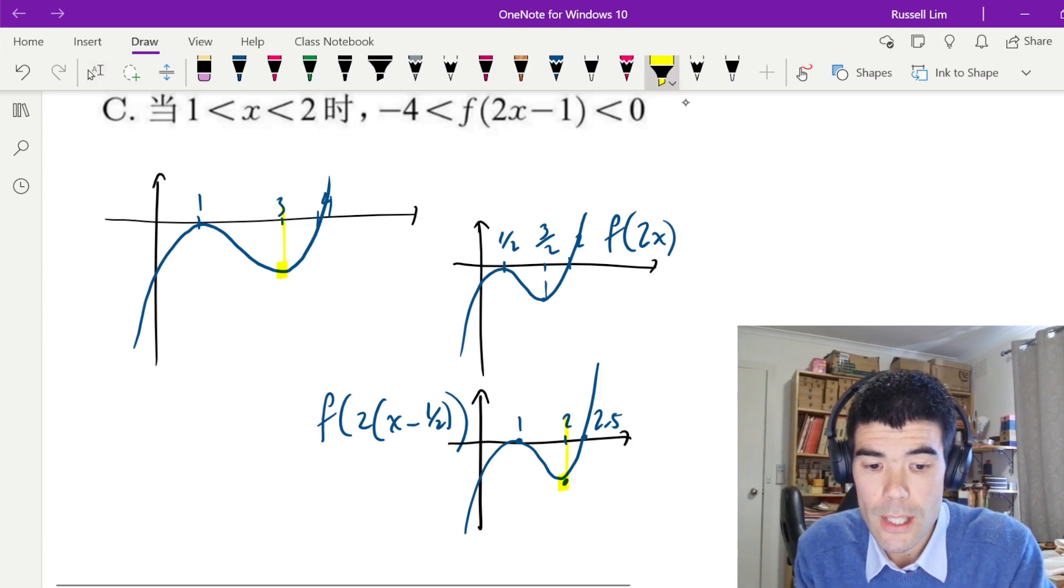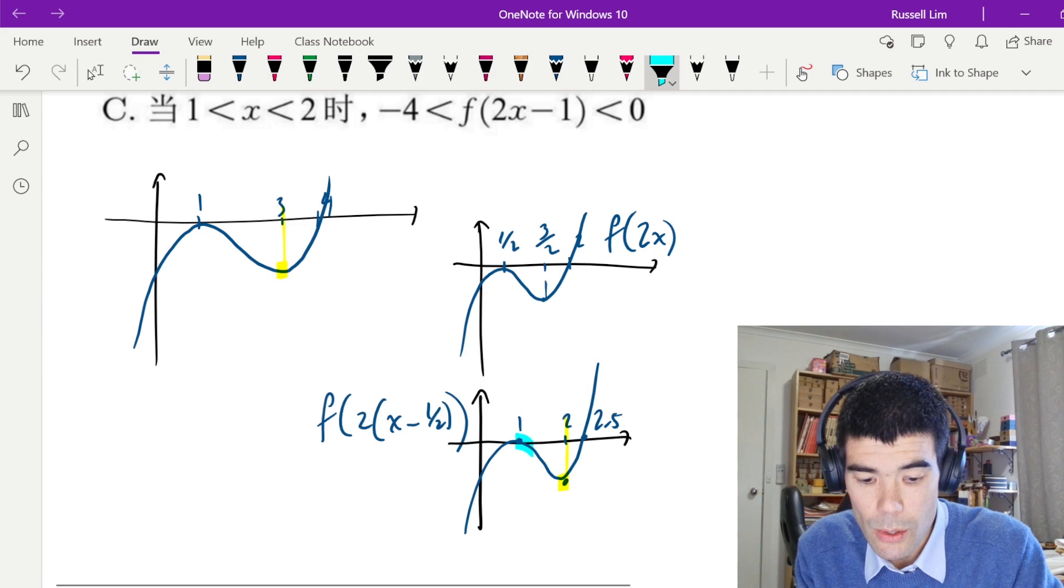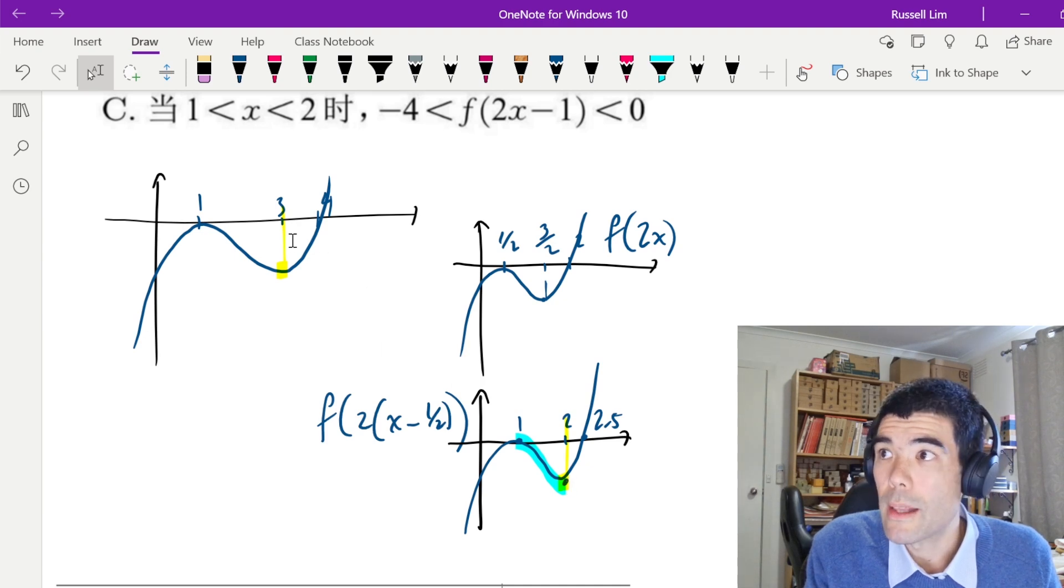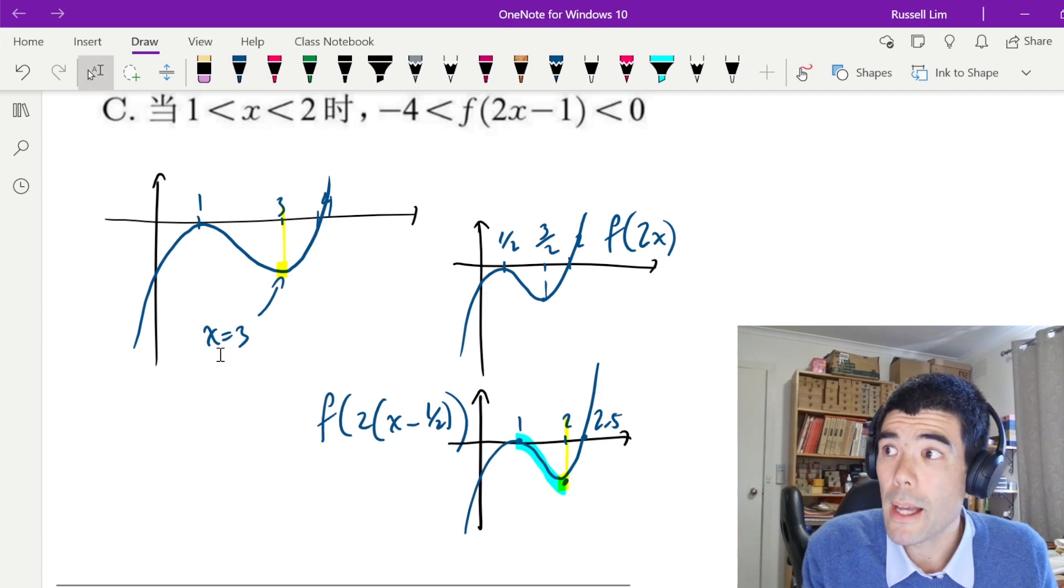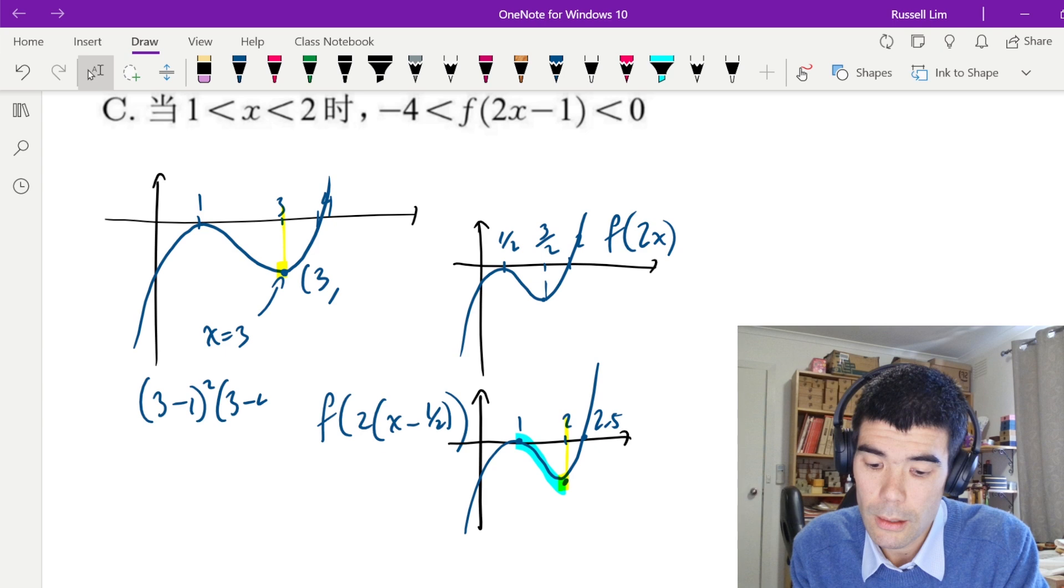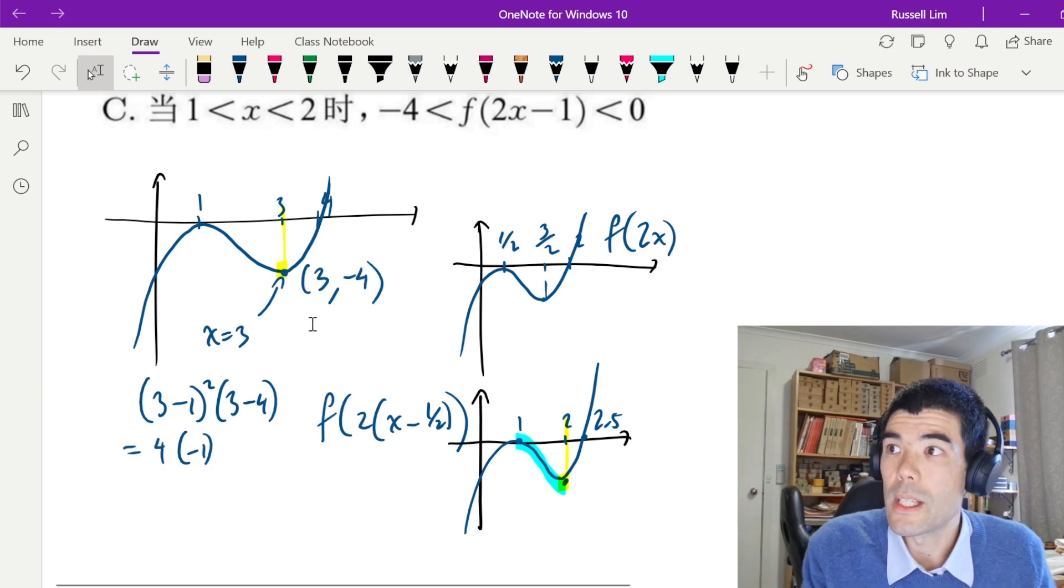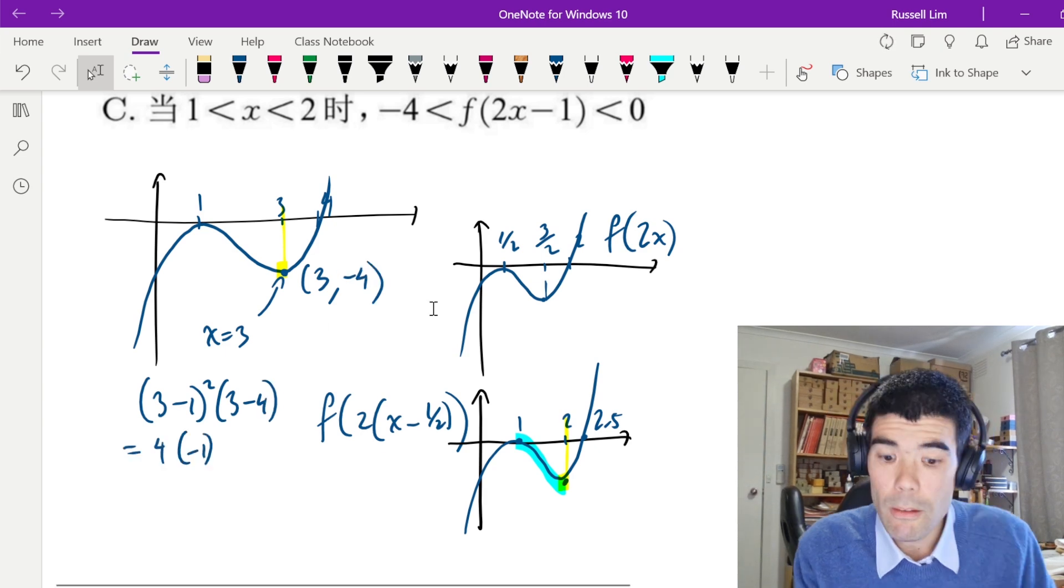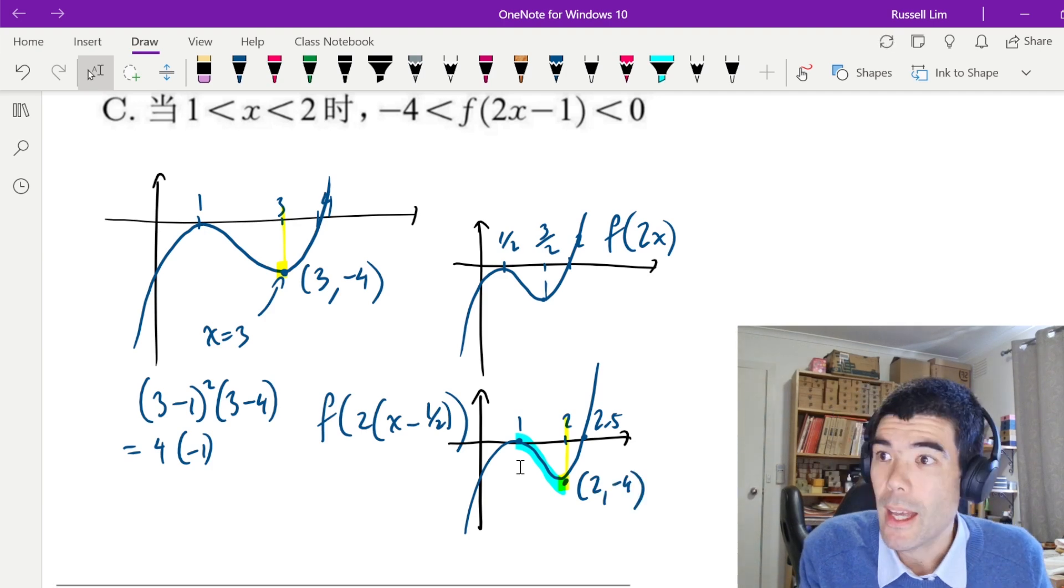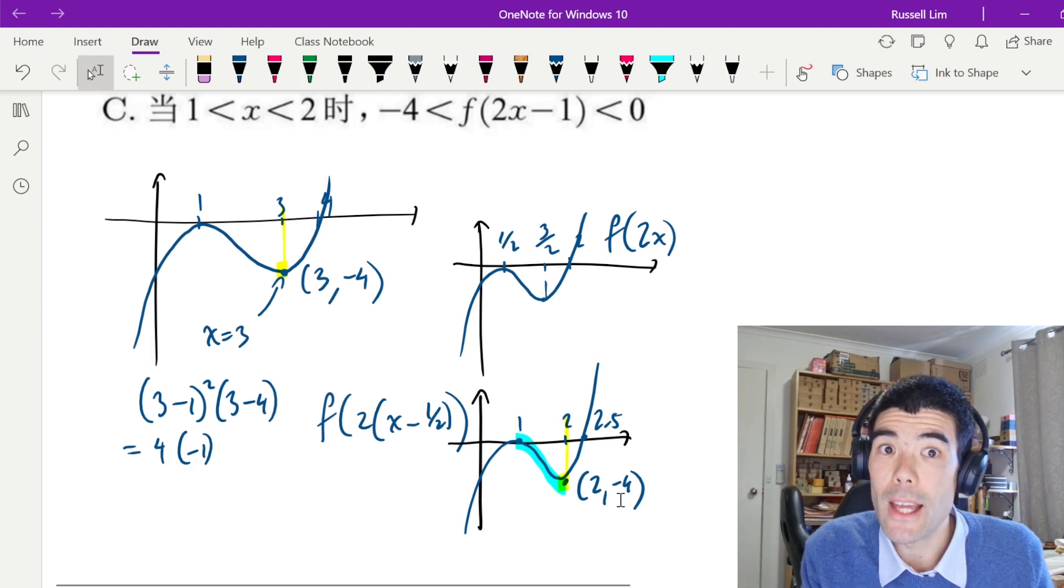We have a local minimum here at 2. The part of the graph we're interested in is between x is 1 and 2. So we can see that this function is still strictly decreasing. We can just calculate each of these end points. We know that this local minimum here at 3 has been transformed to this one. So if we sub x equals 3 into our original equation, we can get the y value. Okay, so this does turn out to have a local minimum at (3, -4), which means this one will have a local minimum at (2, -4). And it is true that this graph on the interval [1, 2] is going to be between -4 and 0.